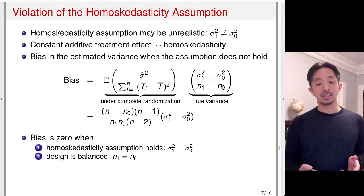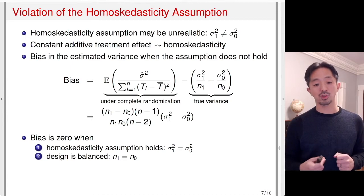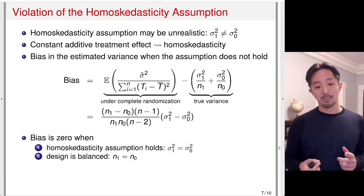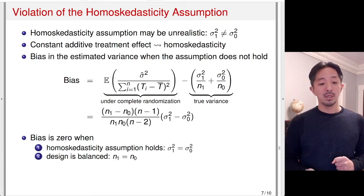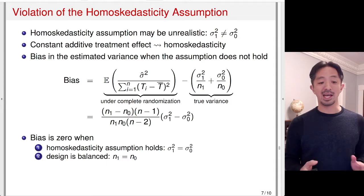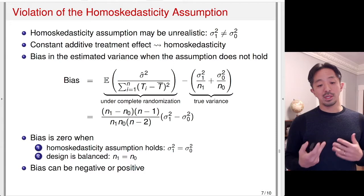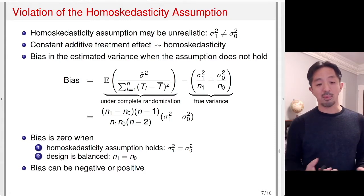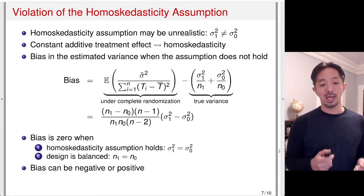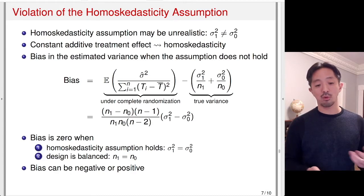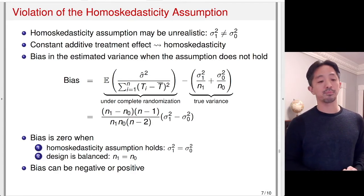Another interesting case is when the design is balanced — when the number of treated units equals the number of control units (N_1 equals N_0). In that case, the bias is also zero because the numerator of the first term becomes zero. So even if homoskedasticity is violated, if the design is balanced, the bias is zero. When neither condition holds, the bias can be either negative or positive, depending on the variance difference between the two conditions and the group sample sizes.